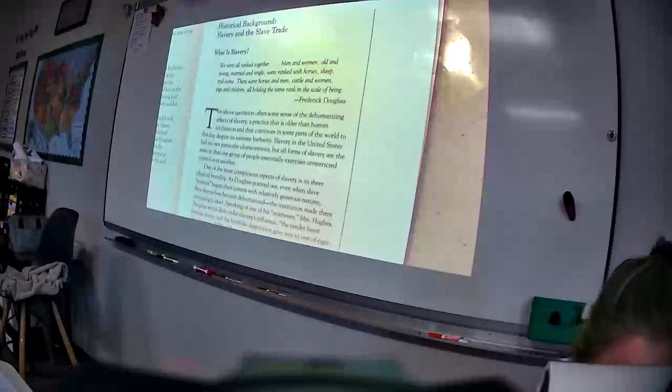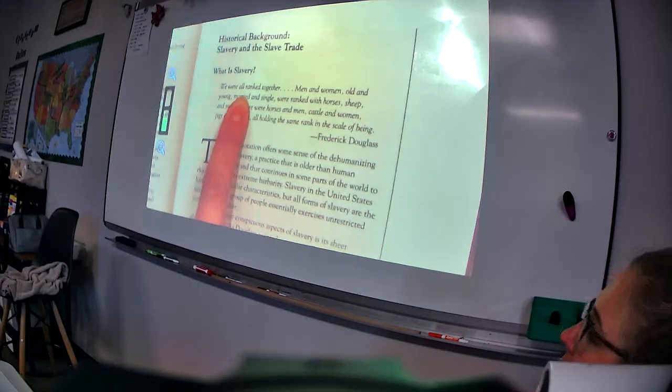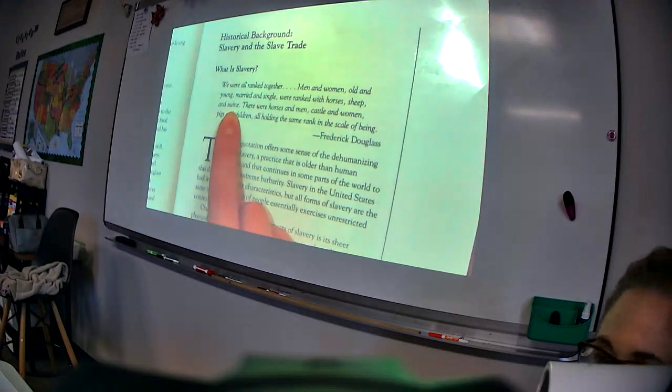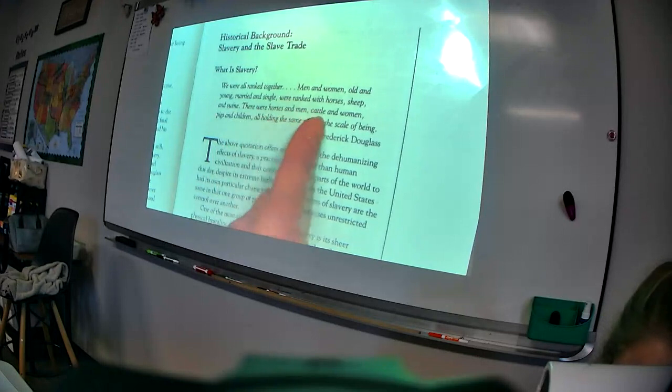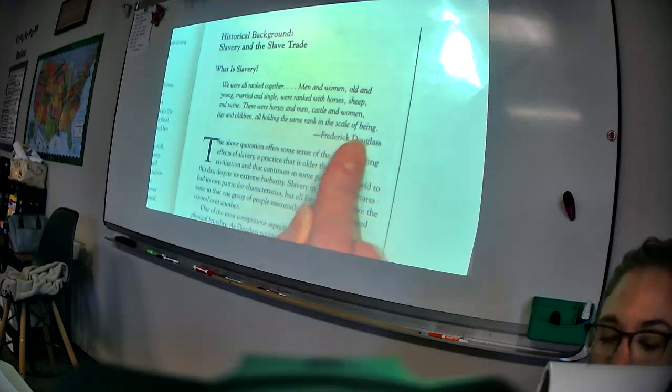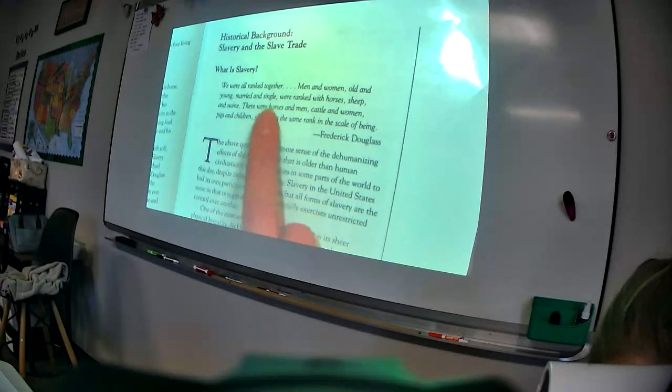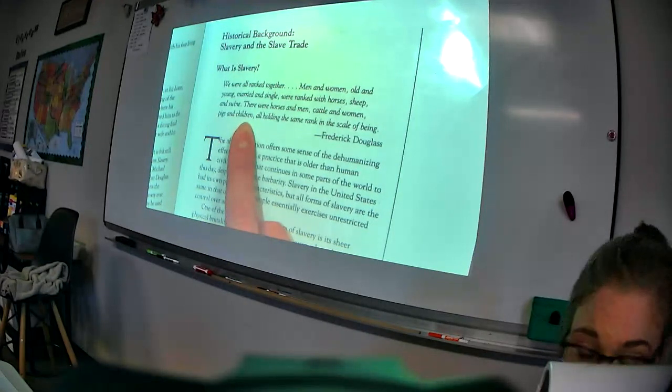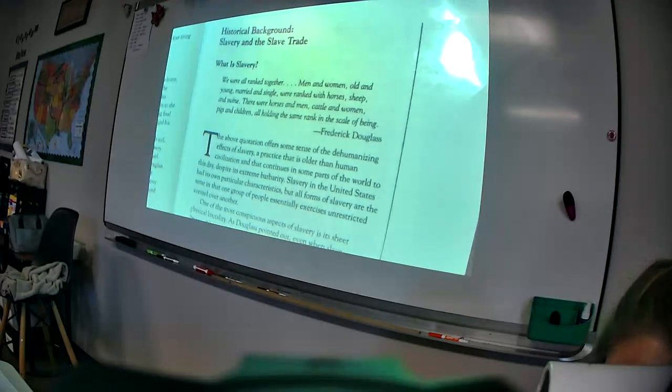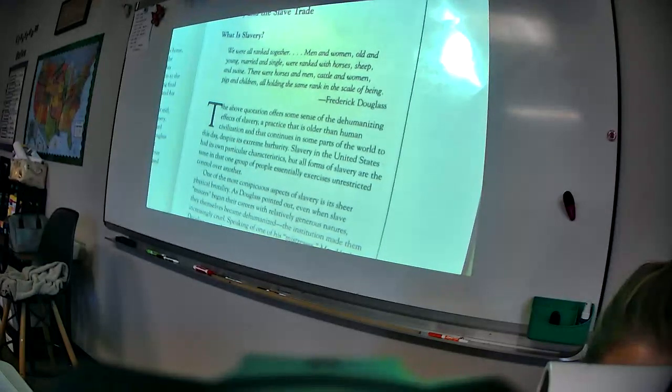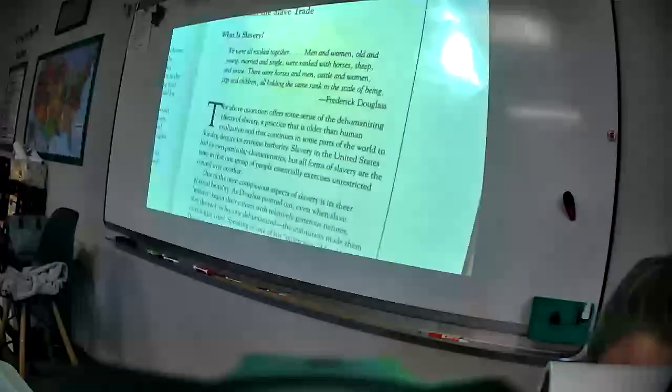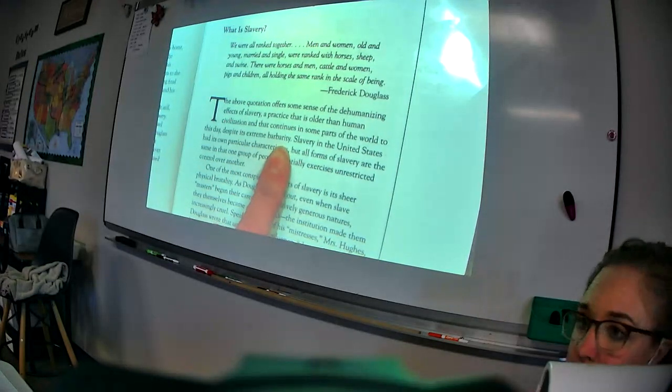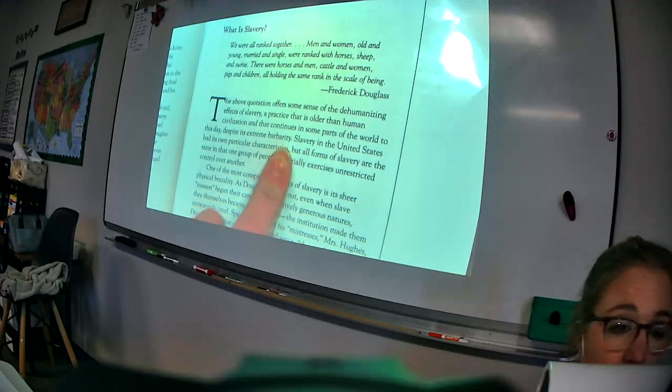What is slavery? This is a quote from Frederick Douglass. We were all ranked together, men and women, old and young, married and single. We were ranked with horses, sheep, and swine, which is a fancy word for pigs. There were horses and men, cattle and women, pigs and children, all holding the same rank in the scale of being. Basically meaning, the horses, men, cattle, women, pigs, and children were all seen equally as important. They were treated the same, seen equally as important. That's so sad.